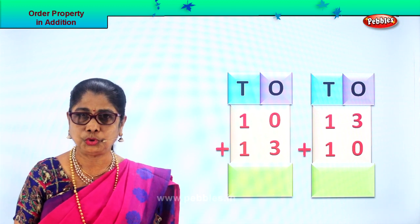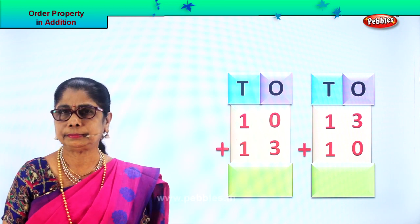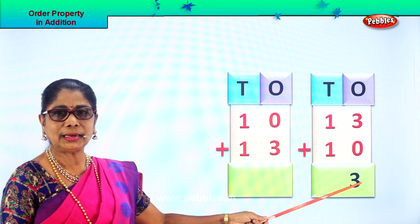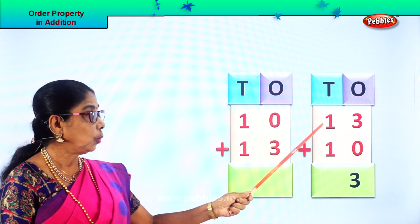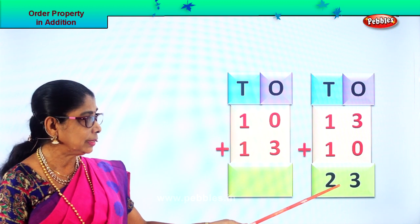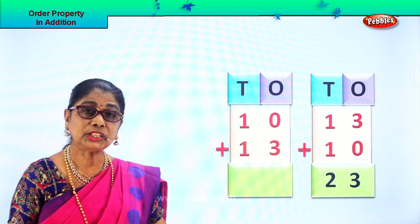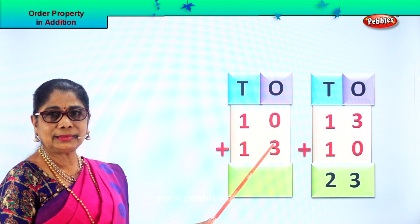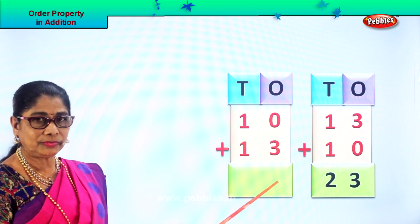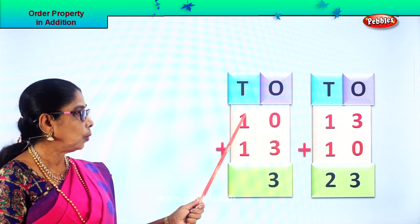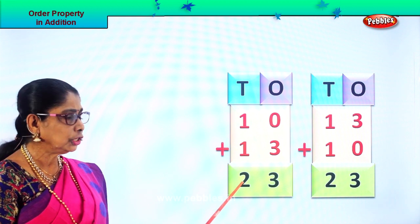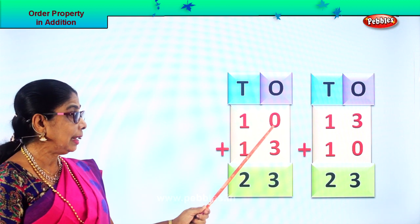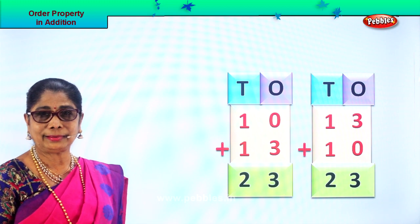We have 13 plus 10 to add, or 10 plus 13. Let's add all the ones first: 3 ones plus 0 ones — 3 plus 0 is 3 itself. So you get 3 in the ones place. Then 1 ten plus 1 ten is 2 tens. 13 plus 10 gives you the answer 23. Now let's add 10 plus 13. In the ones place: 0 ones plus 3 ones — 3 plus 0 is 3 itself. Then 1 ten plus 1 ten is 2 tens. 10 plus 13 is 23. Whether you add 13 plus 10 or 10 plus 13, your answer is 23.